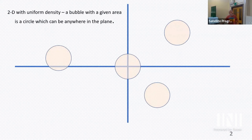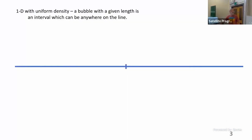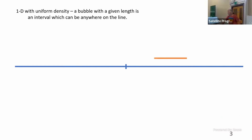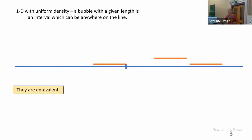To make it even simpler, if we look at 1D — and I'm going to be doing quite a lot on just one-dimensional bubbles because the maths works to start with. If we have a bubble in 1D, just on the line, in Euclidean space, for a given length or given area, it could be anywhere on the line — they're equivalent.